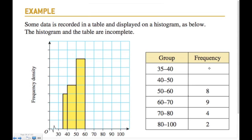Here are some good questions to really help us understand histograms. In this one I'm giving just enough information to complete the histogram and the table. We're given the bar for the 50 to 60 category and also its frequency — that's enough information to complete the rest.